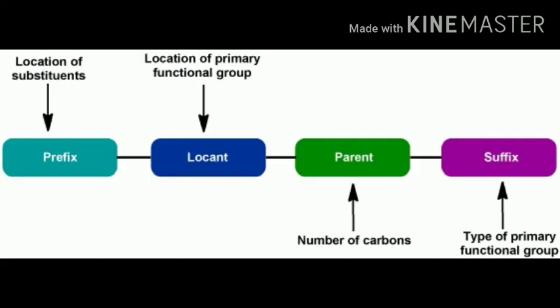Looking at an image summary: the prefix indicates the location of substituents (locant) and the location of the primary functional group. Third is the parent name — number of carbons, straight chain. And the suffix indicates the type of primary functional group.